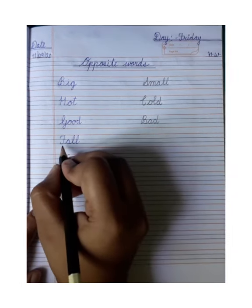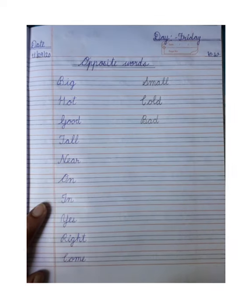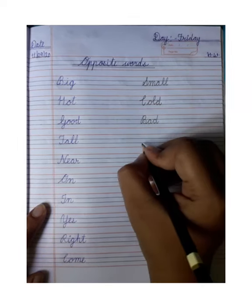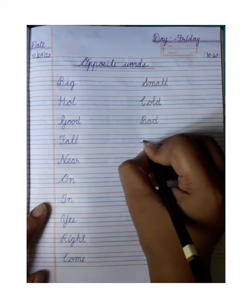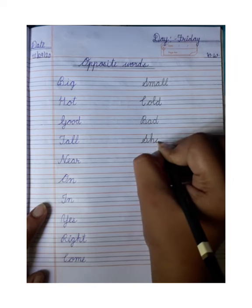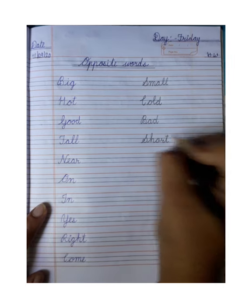Next, tall — T-A-L-L, tall. Tall ka opposite kya hoga? Short. Tall yani lamba, short yani chota. So we will write S-H-O-R-T, short.